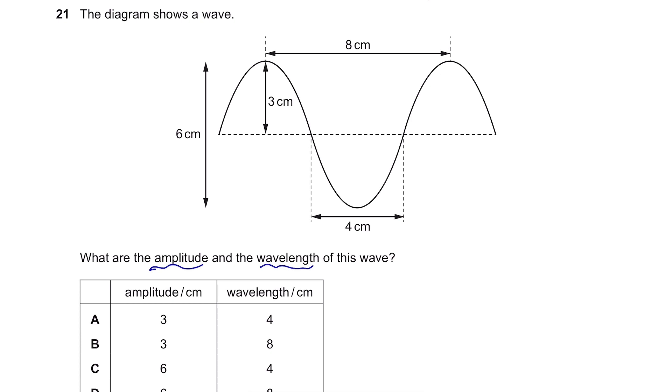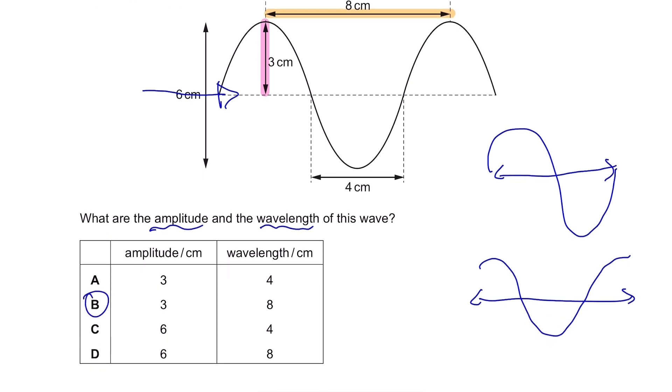Amplitude is the highest point of the wave from the center line, so it's 3 cm. Then wavelength is the length of one complete wave, so either like this or maybe like this. These are the wavelengths and in this diagram, it's this one, 8 cm, so 3 and 8. B is our answer.